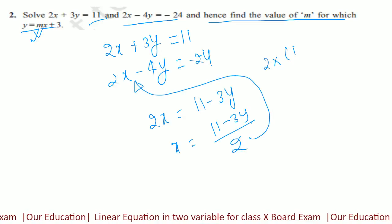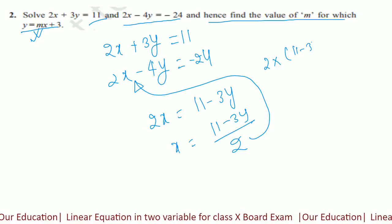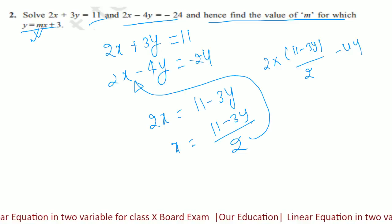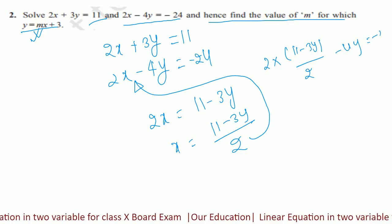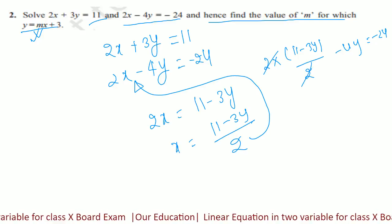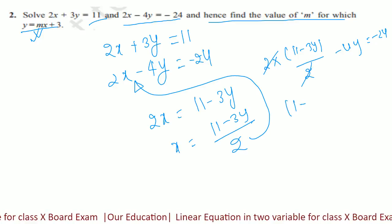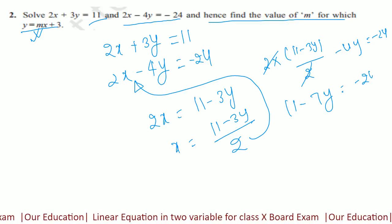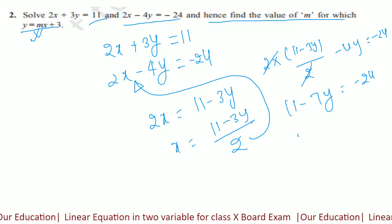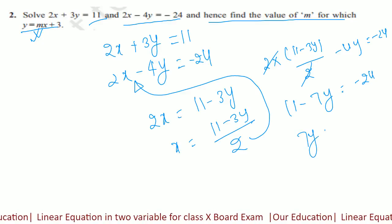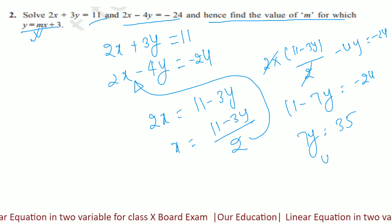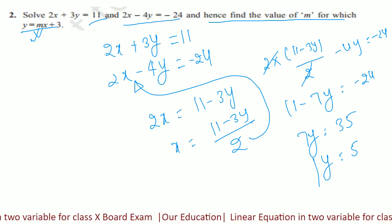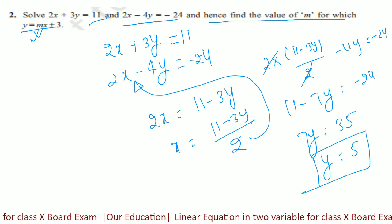2 into (11 minus 3y) by 2, minus 4y is equal to minus 24. यहां से यह कितना आ जाएगा? 11 minus 7y is equal to minus 24. So 7y is equal to 35, तो y is equal to 5.